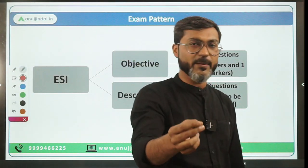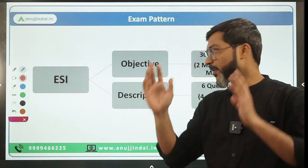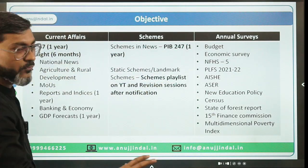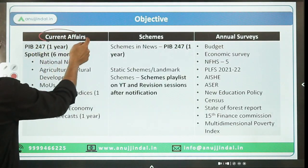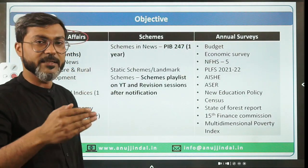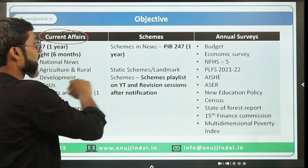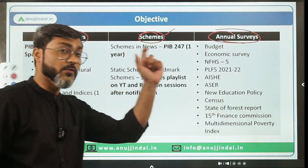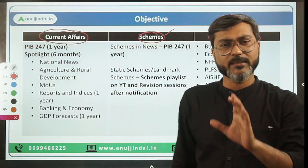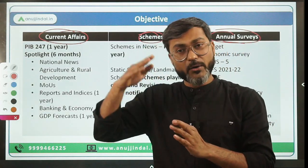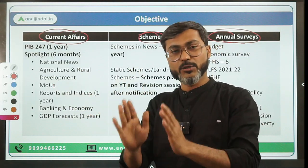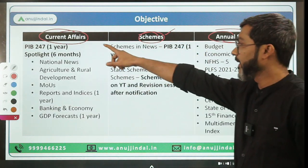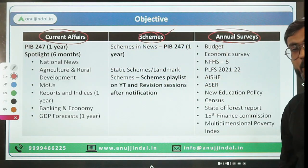Now, talking about the objective part - the objective paper of ESI is divided into three sections. Questions from three sections are generally asked: one is current affairs, one is schemes - one of the most important parts - and then annual surveys and reports. We'll also discuss why last year's paper was difficult and how to tackle that difficulty level. These are the three portions you have to cover for ESI objective.